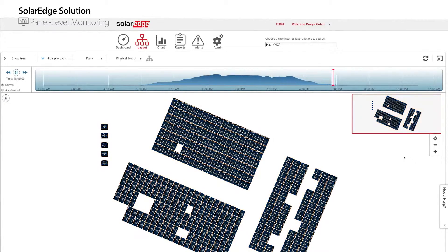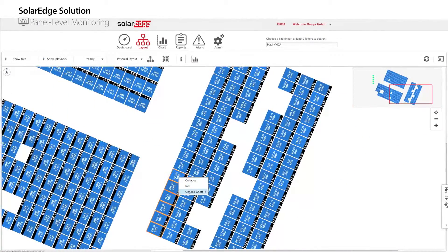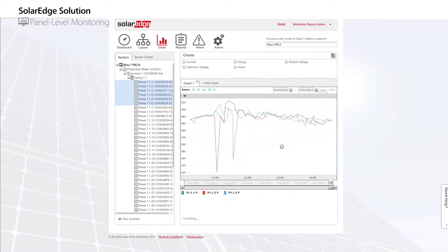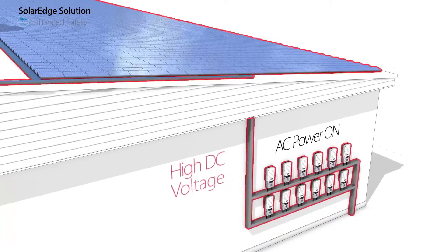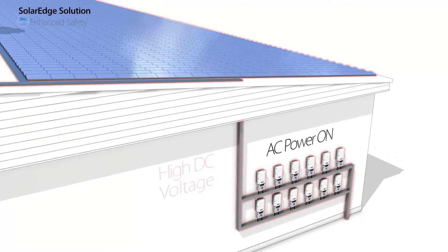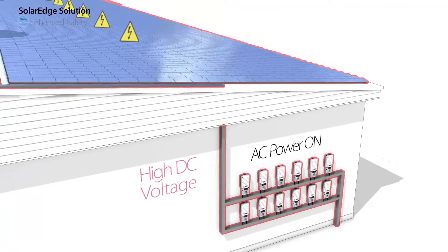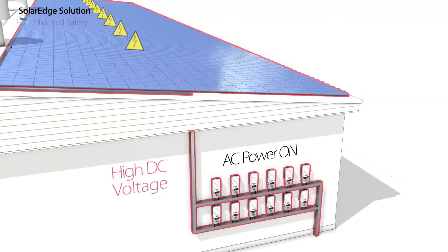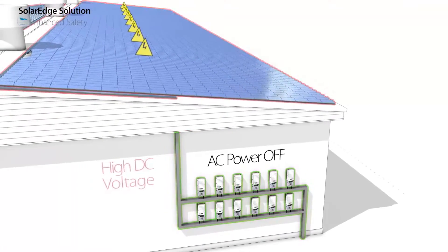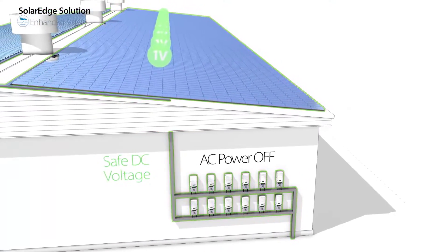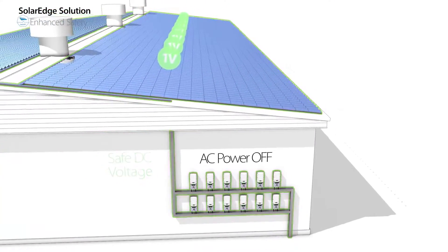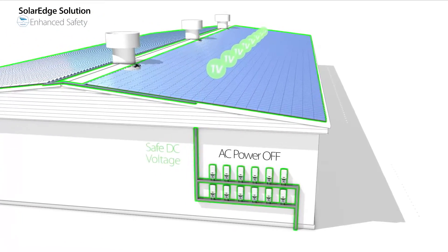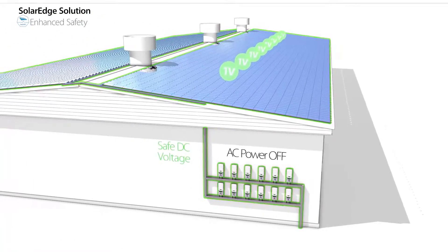These important features reduce long-term operation and maintenance costs and increase system availability. To provide enhanced safety, we have incorporated panel-level safety mechanisms to protect installers, electricians, maintenance personnel, and firefighters. With the SolarEdge solution, whenever AC power is off, the high DC voltage of the string is reduced to a safe voltage.